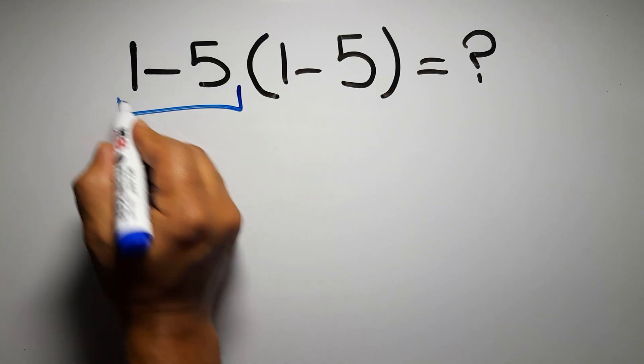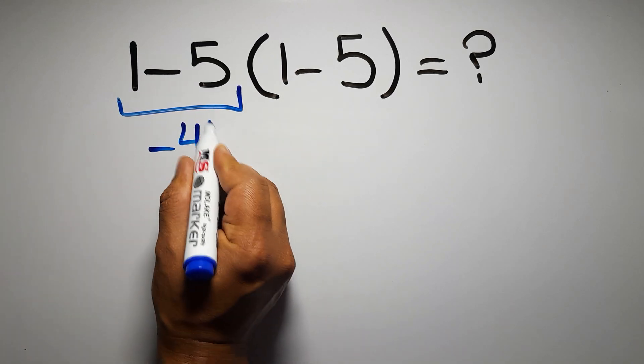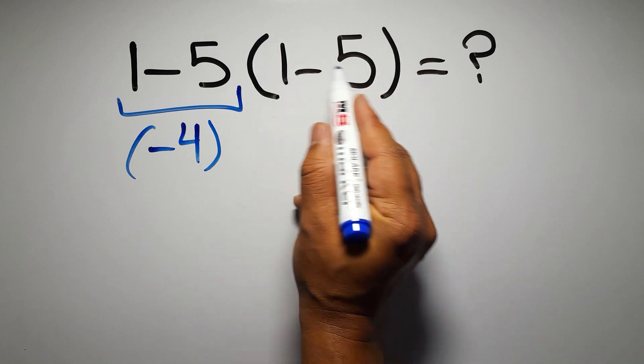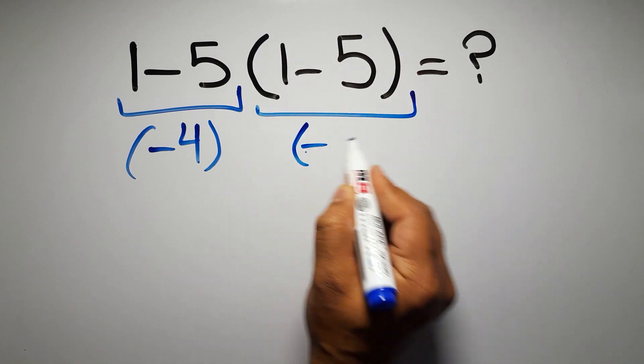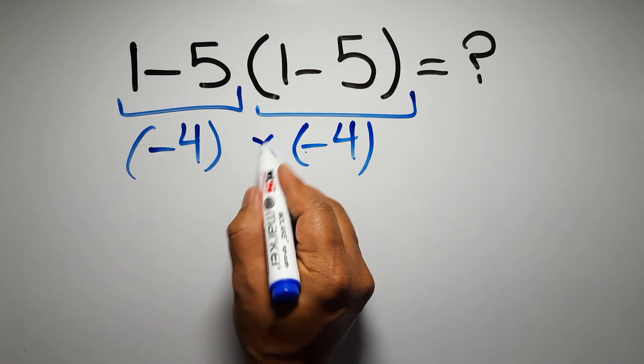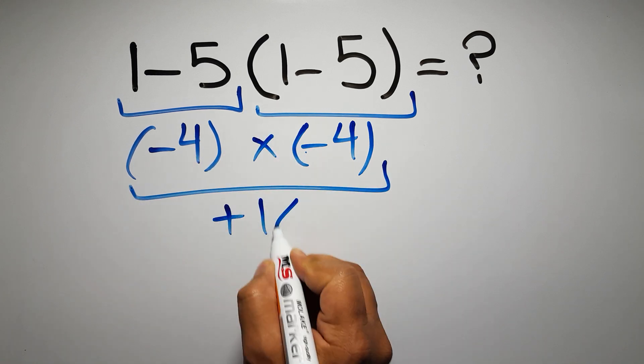1 minus 5 gives us negative 4, and again here inside these parentheses we have 1 minus 5. So negative 4 times negative 4 gives us positive 16.